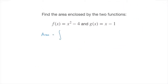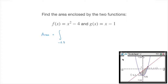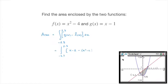The area equals the definite integral whose lower bound is the first intersection's x-coordinate, -1.3, and whose upper bound is the second intersection's x-coordinate, 2.3. Since g(x) is above f(x) between those points, it is the definite integral of g(x) - f(x). More explicitly, that's the integral from -1.3 to 2.3 of (x - 1) - (x² - 4) dx, which simplifies to the integral from -1.3 to 2.3 of -x² + x + 3 dx. The area equals 7.81.